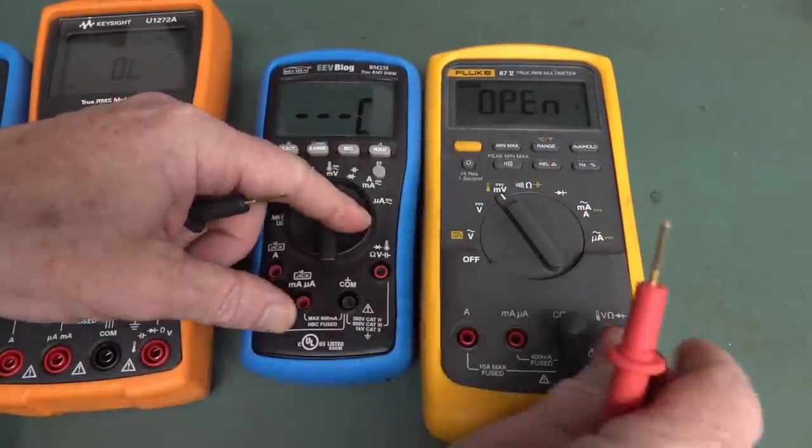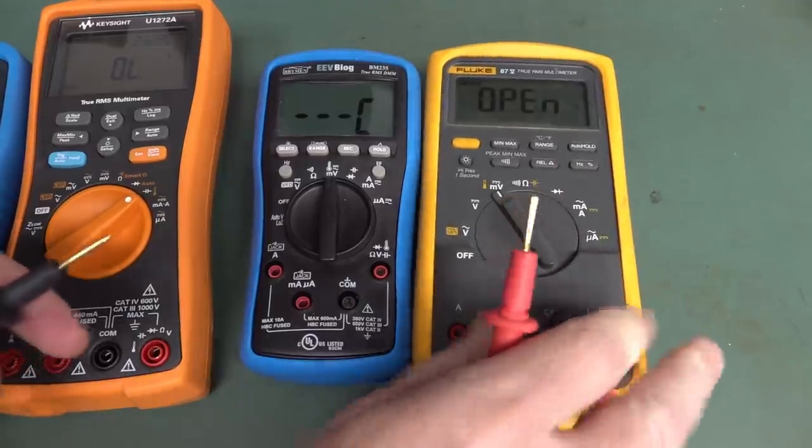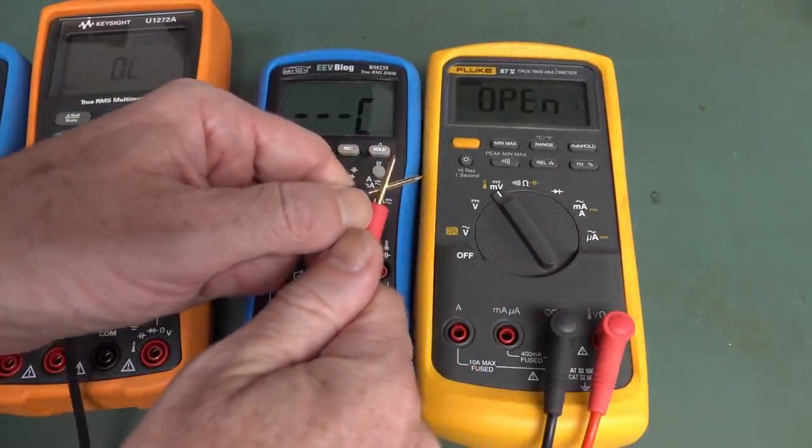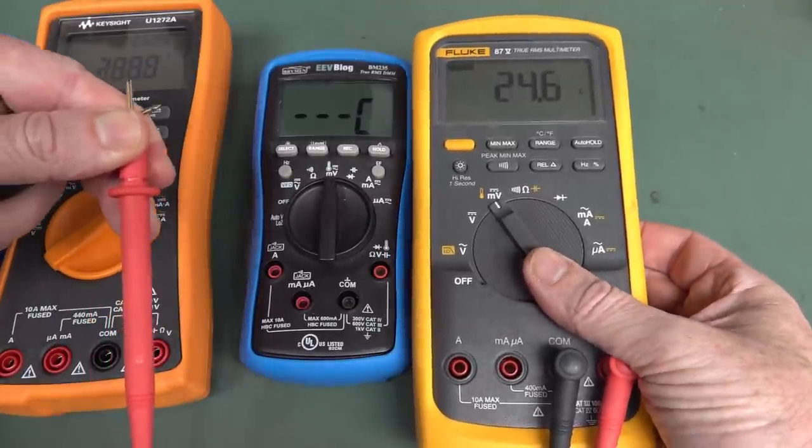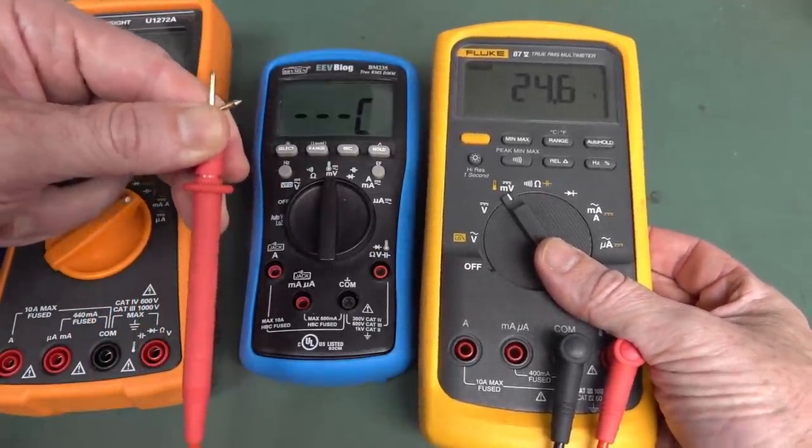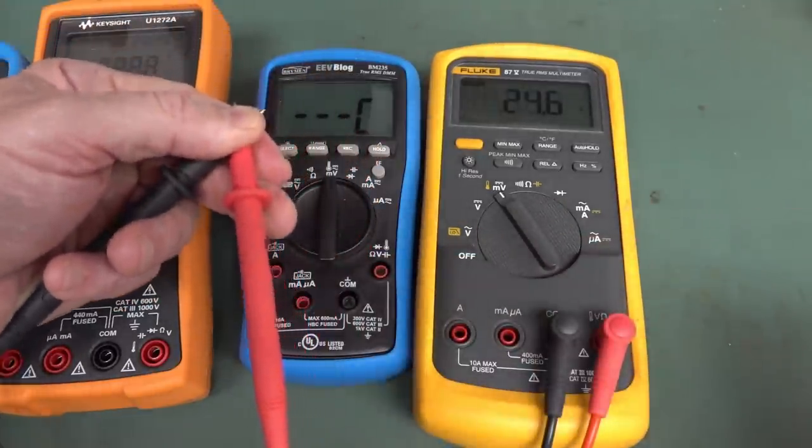And yes, this should work with practically any multimeter that measures temperature. There it is, 24.5. We can now measure the ambient temperature of the room without a thermocouple. Brilliant!